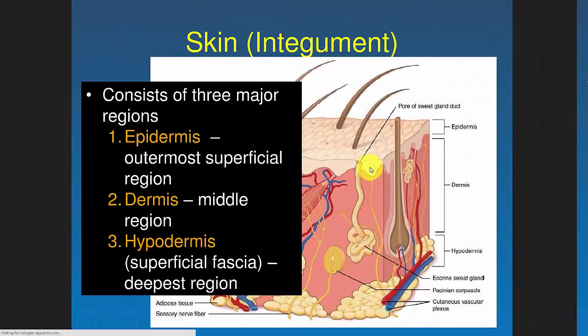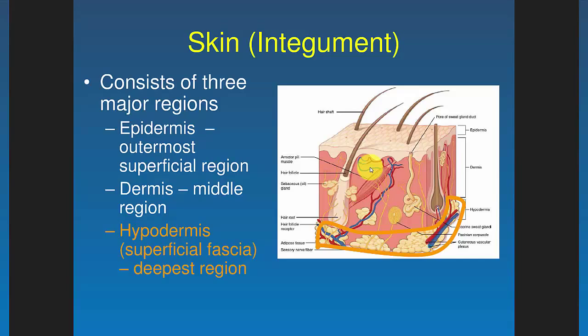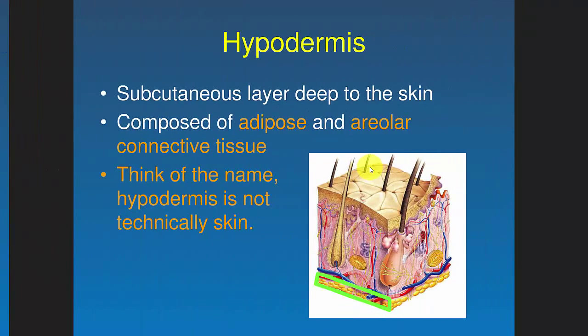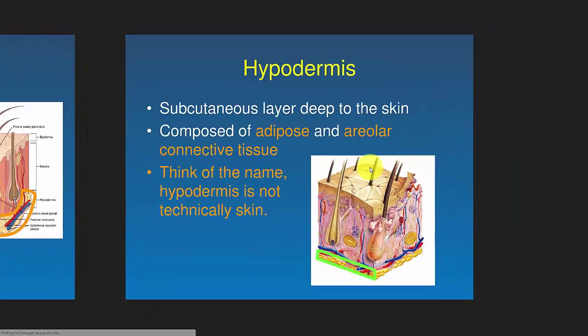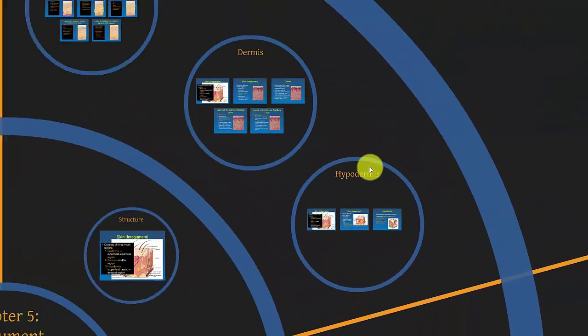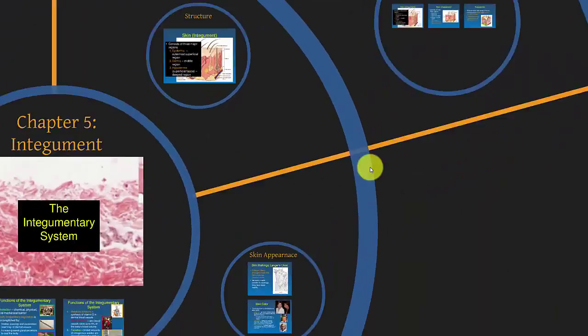The hypodermis is mainly composed of adipose — fat cells — and also areolar connective tissue. Technically, since it's hypo, it's below the dermis and is not really part of the skin. But the main thing there is just storage of fat.